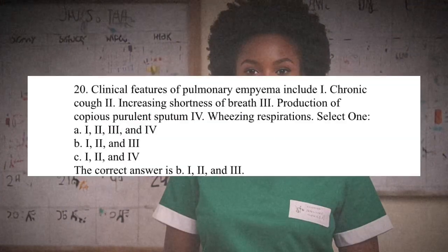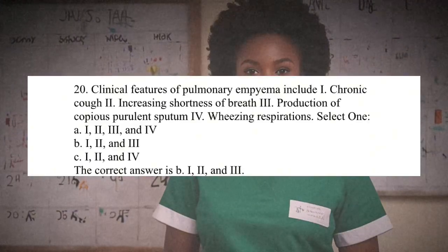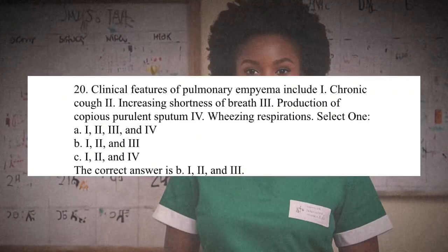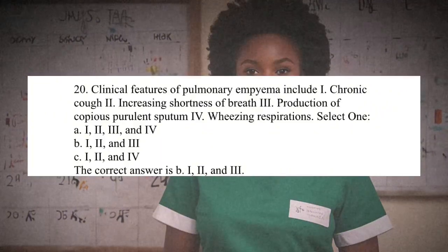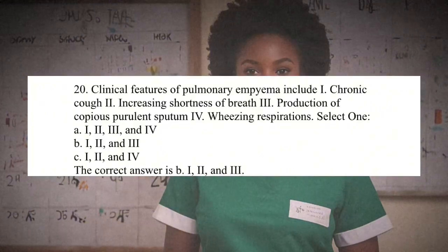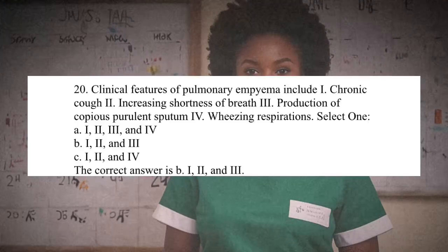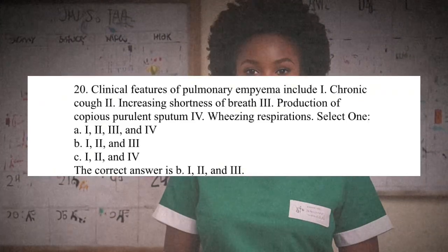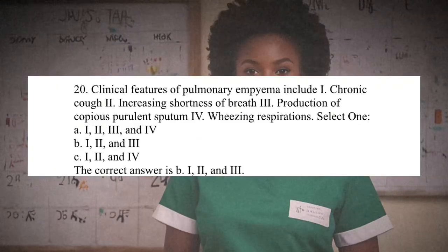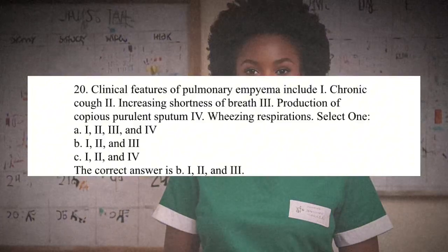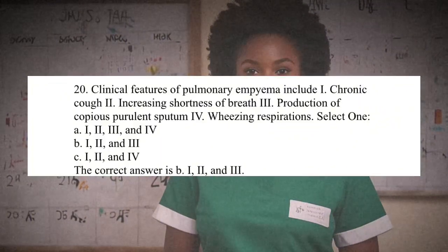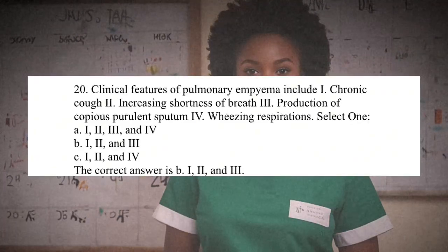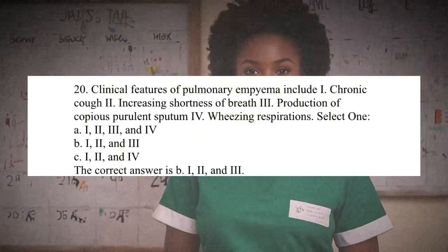Question 20: Clinical features of pulmonary empyema include: 1. Chronic cough, 2. Increasing shortness of breath, 3. Production of copious purulent sputum, 4. Wheezing respirations. A. 1, 2, 3, and 4. B. 1, 2, and 3. C. 1, 2, and 4. The correct answer is B: 1, 2, and 3. The clinical features of pulmonary empyema typically include chronic cough, increasing shortness of breath, and the production of copious purulent sputum. Wheezing respirations are not a characteristic feature of empyema.